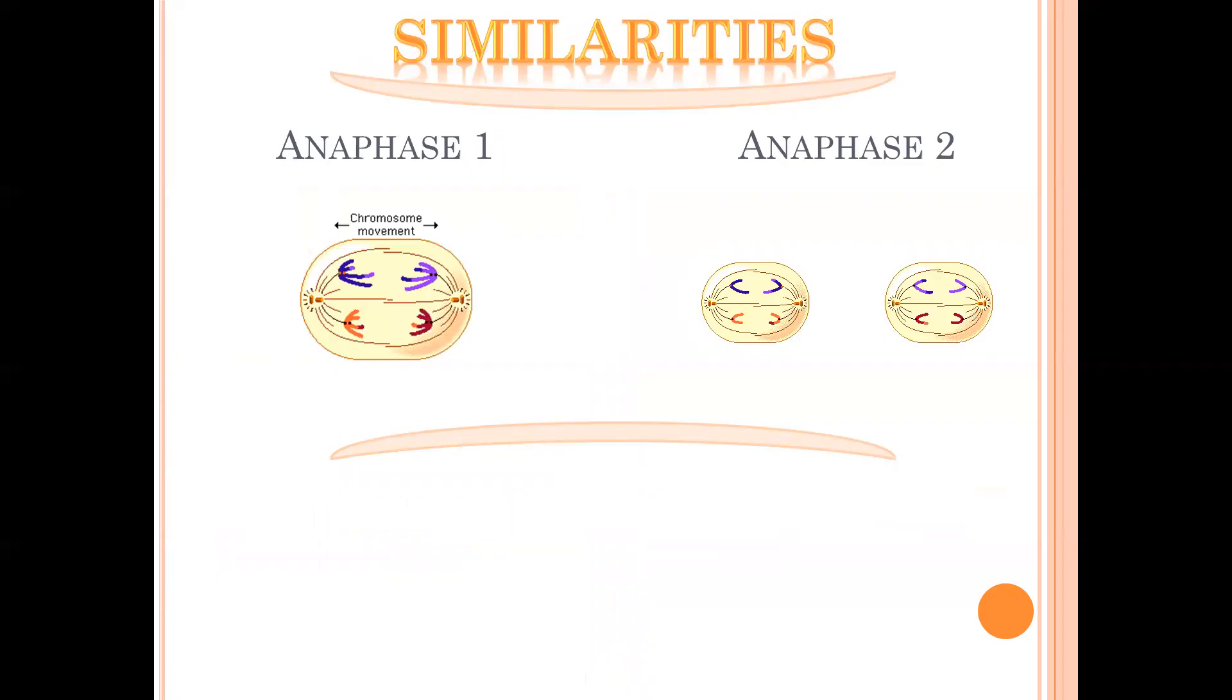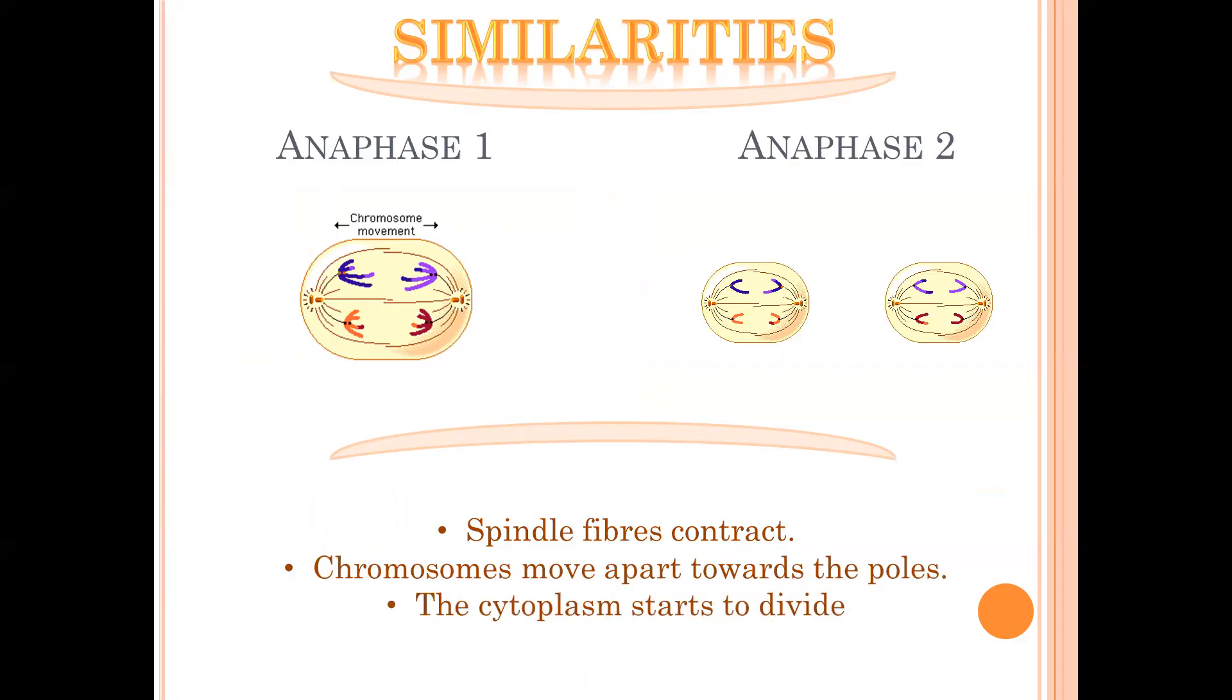When we look at anaphase, A for anaphase, A for away, the chromosomes are being pulled away from the equator. That's because the spindle fiber contracts in both anaphase I and anaphase II, and that pulls the chromosomes apart to the poles. We also find that the process of cytokinesis commences in anaphase.